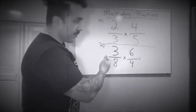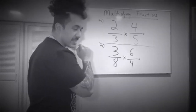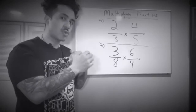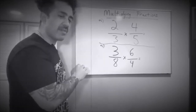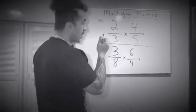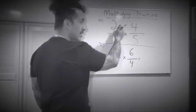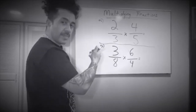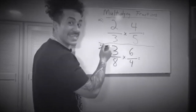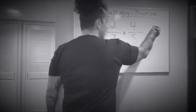The first example we have is 2 over 3 — 2 thirds — times 4 over 5 — 4 fifths. Multiplying fractions is easy-peasy. The first step is to multiply the numerator times the numerator — the top numbers. What's 2 times 4? It's 8. Not 6, Mr. Dona — it's okay, he's taking a nap. 2 times 4 is 8.